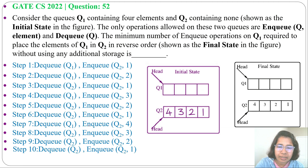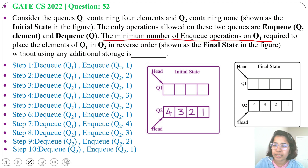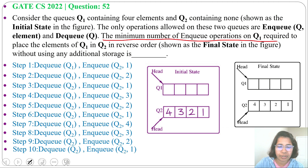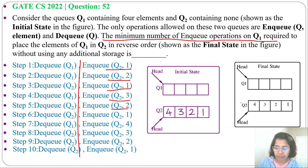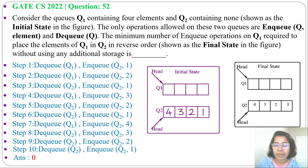The question asks for the minimum number of NQ operations on Q1 required to place elements of Q1 in Q2 in reverse order. We did 10 NQ operations but all 10 were on Q2. Without doing a single NQ at Q1, we reversed the order in Q2. So the answer is 0.